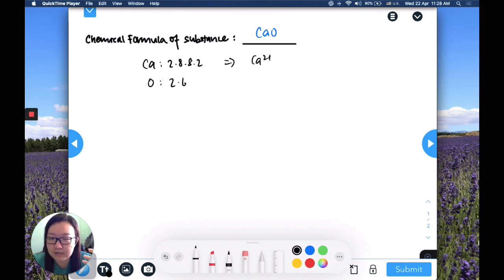to look at the electronic configuration. By now you should be able to do this very quickly. Calcium is 2.8.2, you will lose two electrons to form calcium cation Ca²⁺, and then oxygen will gain two electrons to form oxide anion O²⁻. We always begin by drawing the cation